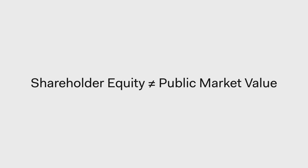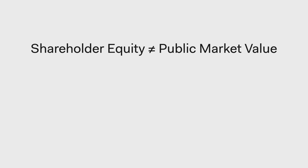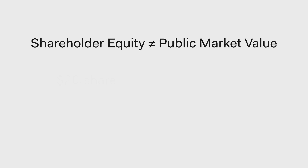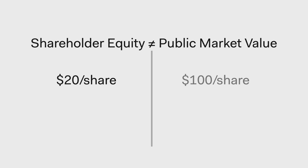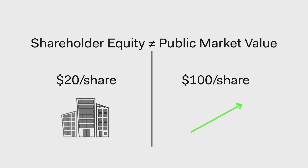The shareholder equity section can also be thought of as the book value or net worth of a company. It's important to realize that shareholder equity does not necessarily equal the value that public markets put on shareholder equity. For example, the shareholder equity section could value a company at $20 per share, whereas the public stock could trade at $100 per share — meaning public markets believe the company will continue to grow and produce value. Meanwhile, the shareholder equity section simply represents the amount each shareholder would get if the company closed its doors, sold all its assets, and paid off all its debts.